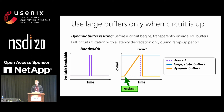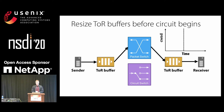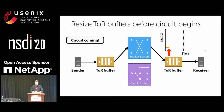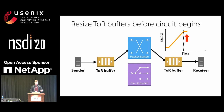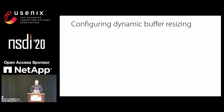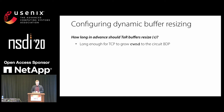Returning to the visualization: when the packet network is in use, the congestion window is small. At some point before the circuit, we detect it is inbound and increase the ToR buffers, allowing the congestion window to ramp up. When we switch to the circuit network, we have our desired high utilization, then drop back down on returning to the packet network. Two key parameters: how far in advance to resize — enough time for TCP to grow its congestion window to the circuit bandwidth-delay product, dependent on TCP variant and RTT — and how large to make the buffers, which is a conservative upper bound of the circuit bandwidth-delay product.